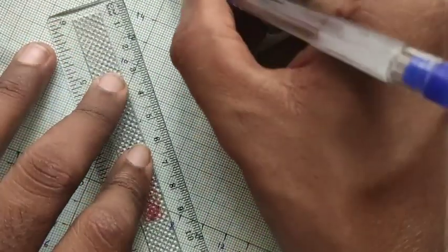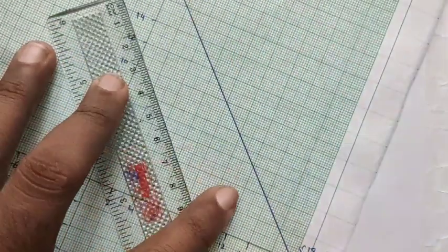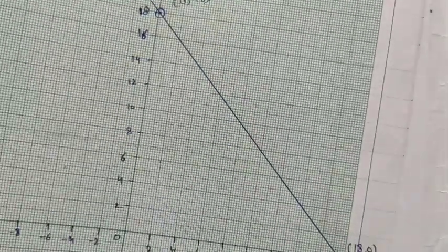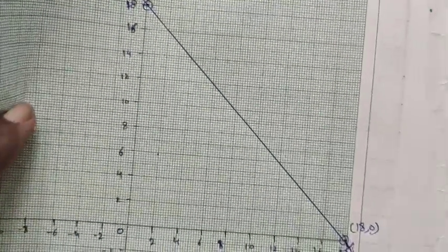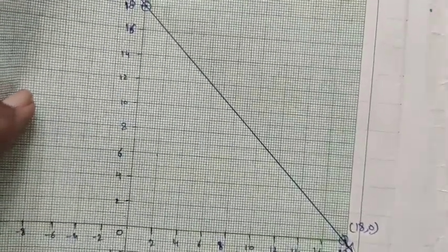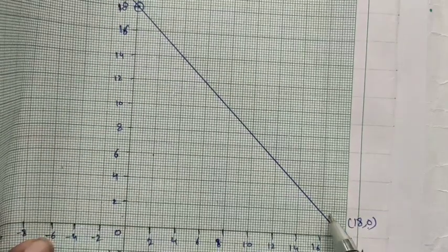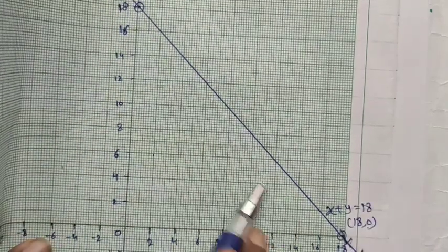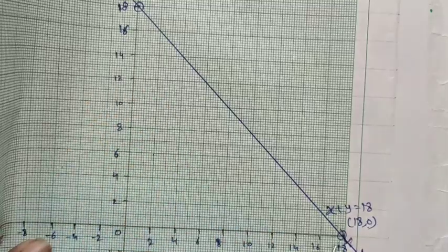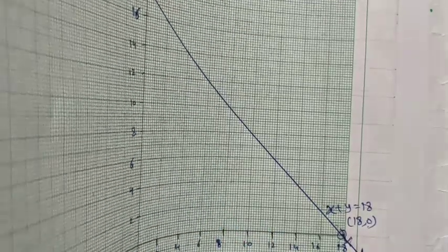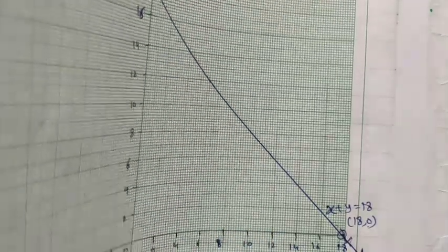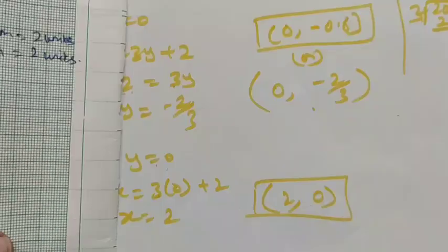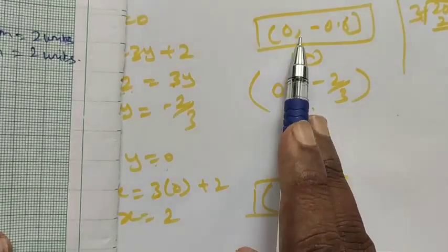The line for the first equation is x + y = 18. This line represents the equation x + y = 18. Wherever a point lies on this line, it satisfies x + y = 18.